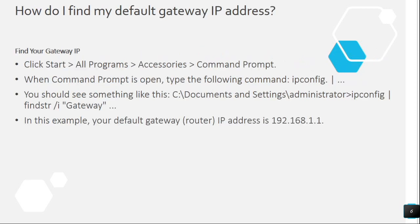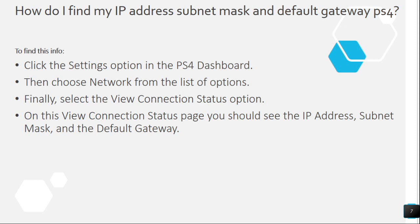Question 5: How do I find my default gateway IP address? Click Start, All Programs, Accessories, Command Prompt. When Command Prompt is open, type the following command: ipconfig (IP protocol configuration). You should see output like: C:\Documents and Settings\Administrator> ipconfig. Find the default gateway line. In this example, your default gateway router IP address is 192.168.1.1.